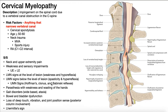We might also see clonus, Babinski reflexes, inverted supinator sign, and Hoffman's sign. Paresthesias with weakness and wasting in the hands are common — you tend to see weakness more distally, particularly in the hands. You might see atrophy of the thenar eminence, weakness in grip, clumsiness with hand movement, coordination and fractionated movement difficulties, and also sensory changes like paresthesias, numbness, tingling, and pins and needles.